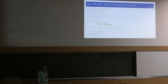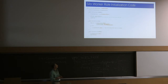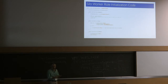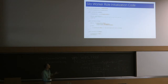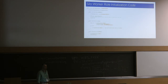Worker role code has three events: onStart, run, and onStop. In onStart you prepare; when it says run, you run the silo; when shutting down, you stop the silo. Very straightforward.